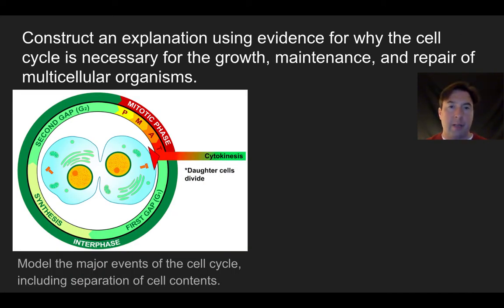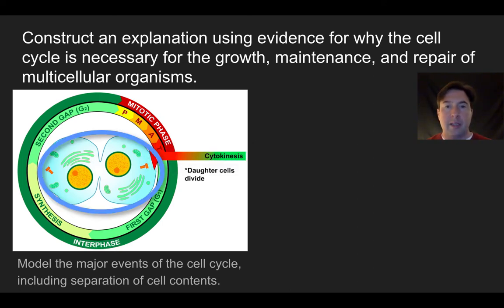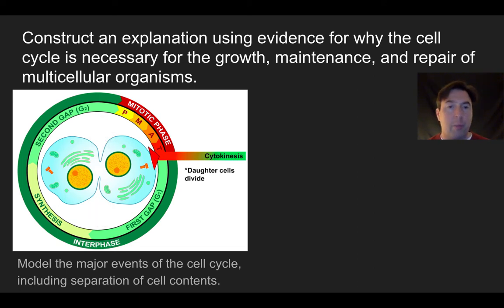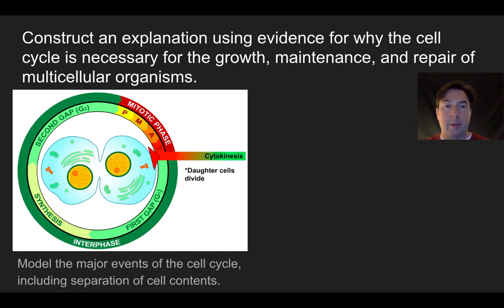Now we go through cytokinesis — the division of the cytoplasm. Both resulting cells look identical because they divide the same information, same cytoplasm, and the same number of organelles. The membrane pinches off and separates the two into separate locations. It's also important to note that in a plant cell or any cell with a cell wall, you need an additional step to establish the cell wall separating the two. This represents a simple animal-like cell separating equal contents without dealing with a cell wall.